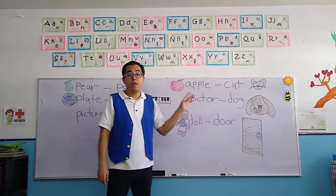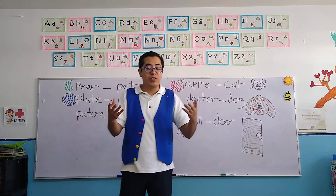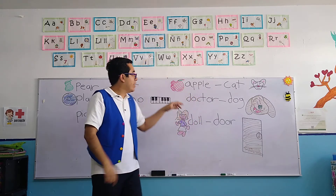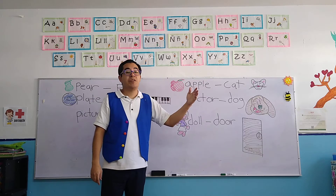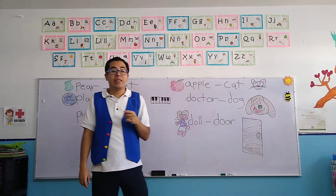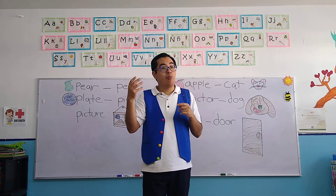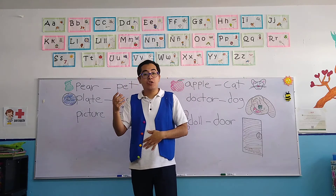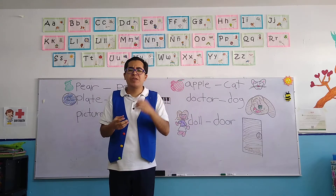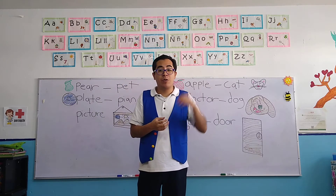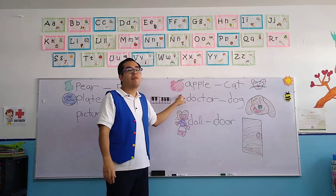Let's continue with the second page. For the second page, we have more objects that we have seen before. The apple — that's a very common and easy word. Don't forget that apple is a fruit. Apples are color red, and sometimes you can find apples that are color yellow and green, but the most common are red.